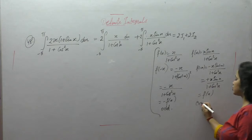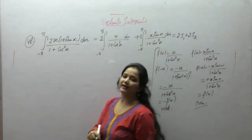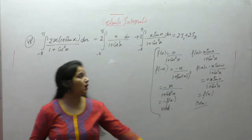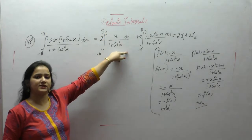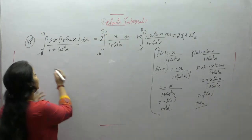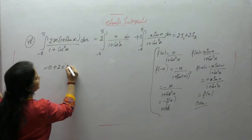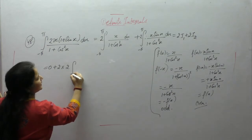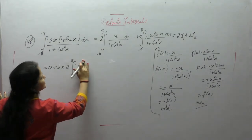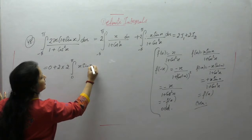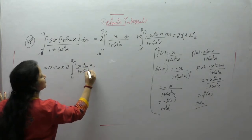Therefore the function in I2 is even. When the function is odd, the integral from minus a to a of f(x) dx equals 0, so I1 = 0. When the function is even, the integral from minus a to a equals 2 times the integral from 0 to a. So I2 = 2 times the integral from 0 to pi of x sinx upon (1 + cos²x) dx.